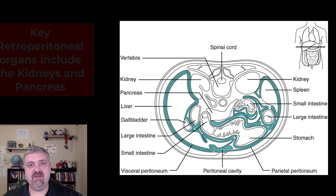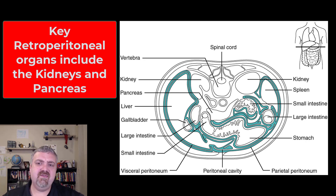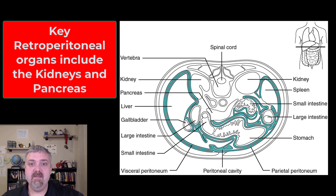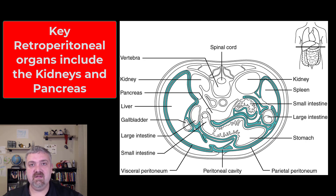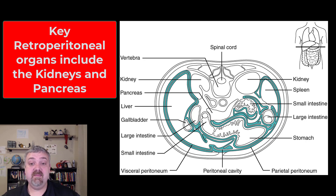A couple more things. You'll notice that not all these structures are actually inside this greenish peritoneal cavity. During embryonic development, some structures stayed behind this peritoneal cavity. The key ones are going to be the kidneys and the pancreas — those are the two key retroperitoneal organs. The complete list of structures that are either completely or partially retroperitoneal would be the duodenum, the first portion of the small intestine, the pancreas, parts of your ascending and descending colon, and your rectum. Those are structures considered completely or partially retroperitoneal.